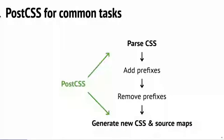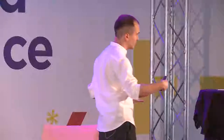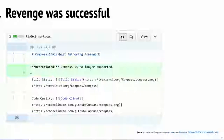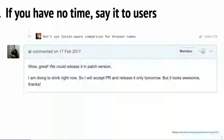PostCSS is not a tool framework. PostCSS is just a CSS parser and CSS string generator — of course with source map support. And with all this power, we killed Compass.